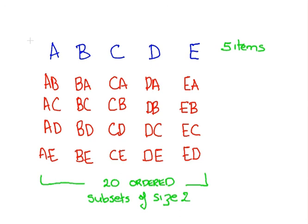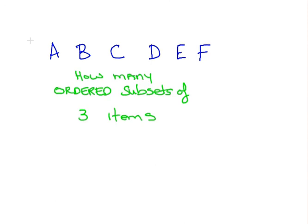Suppose though I have six numbers or six items and I want to choose three items and structure ordered lists. How many ordered subsets of three items are there? Well, what we're going to do is go back and use that equation again here.